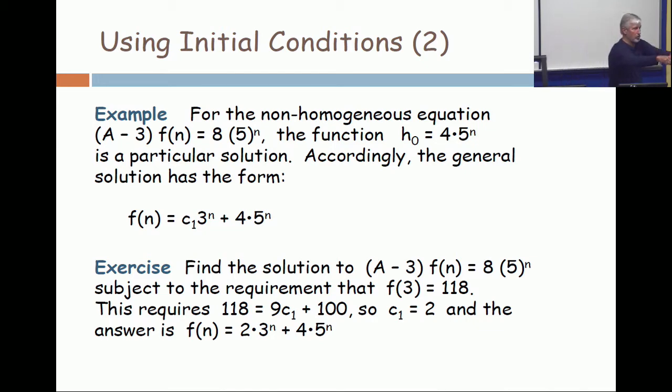So that's the general solution. You see how I have to have a sum of the particular solution, the 4 times 5 to the n, plus the general solution. Now, the general solution in this case just consists of one term because it's a one-dimensional vector space. If this were an 8-dimensional vector space, I'd have a particular function plus 8 terms.